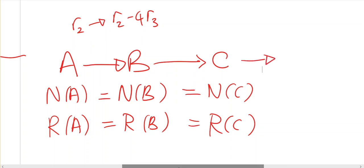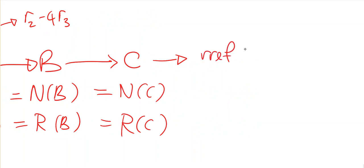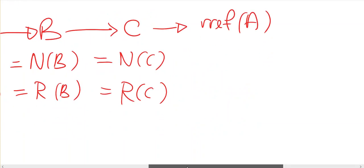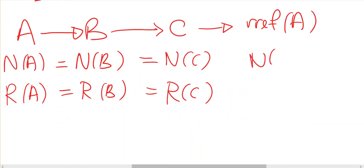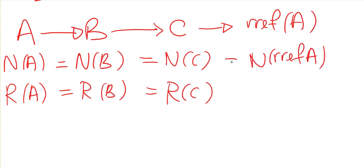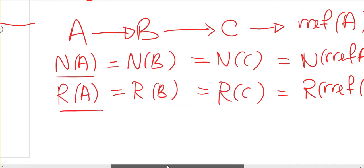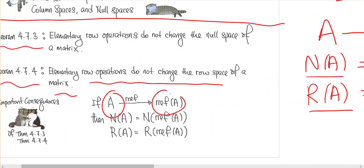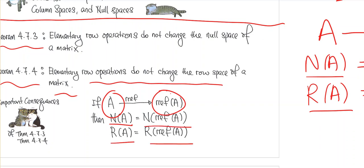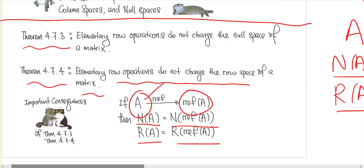So if you get to the RREF matrix of A, the null space of the RREF of A is the same as the null space of C, and the row space of the RREF of A is the same as the row space of C — which goes all the way back to the row space of A and null space of A. So: if you have a matrix A and row reduce it to the RREF matrix, then the null space of A equals the null space of RREF(A), and the row space of A equals the row space of RREF(A).